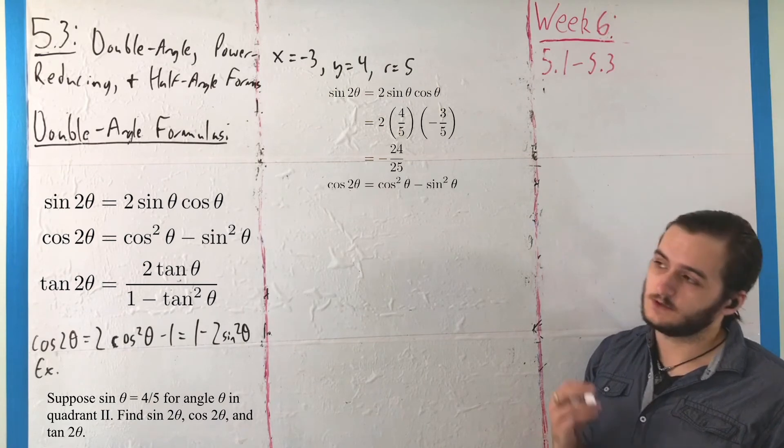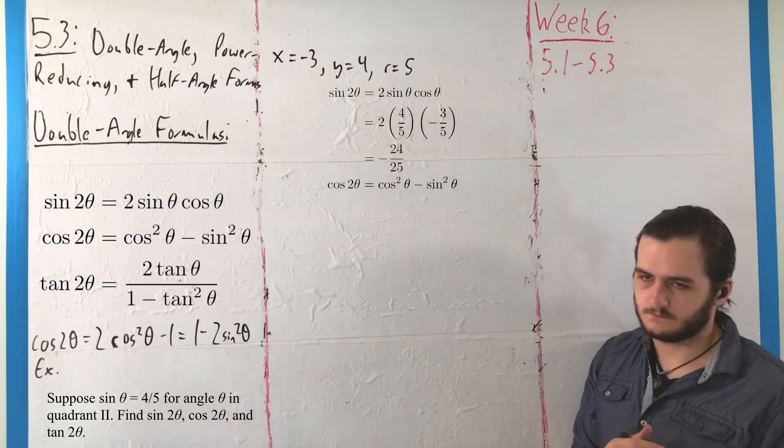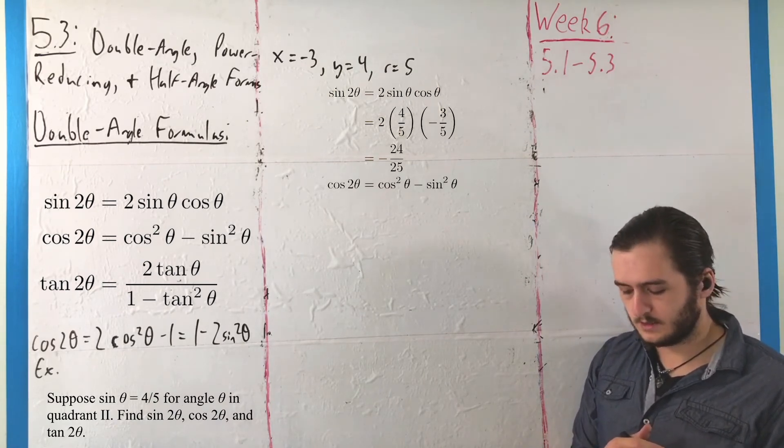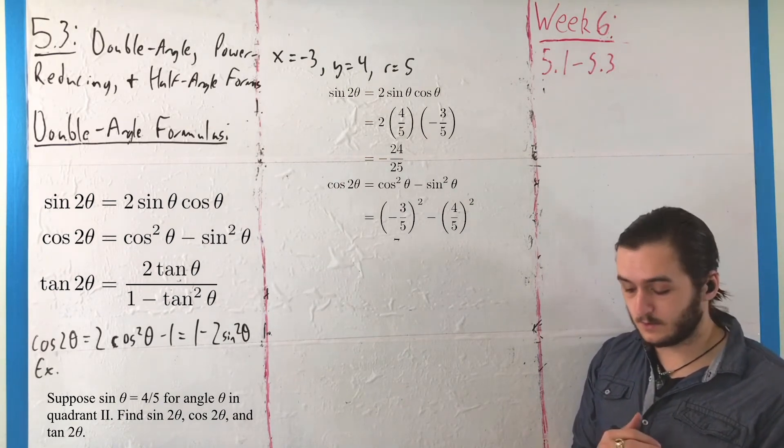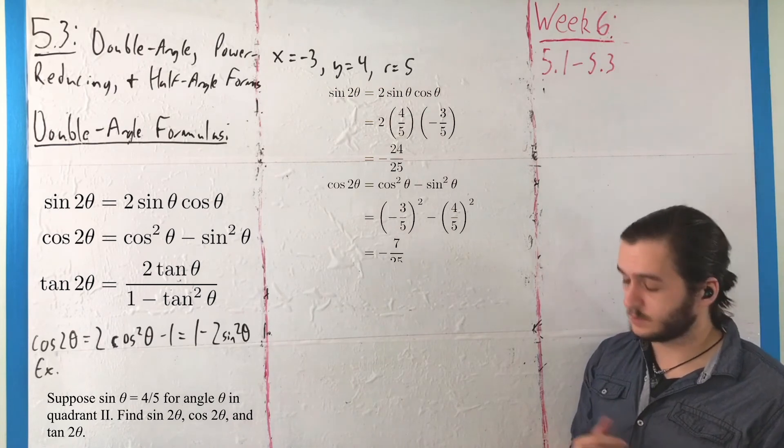For cosine of 2θ, using the base form, we get cosine squared minus sine squared, which is negative 3/5 squared minus 4/5 squared, for a total of negative 7/25.